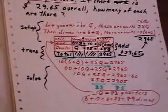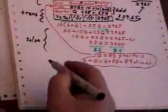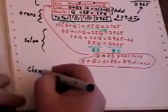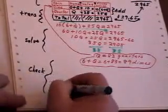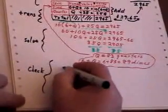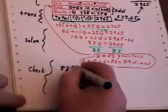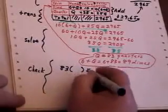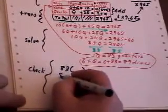And now all we have to do is just do a little check here. 83 quarters and 89 dimes.